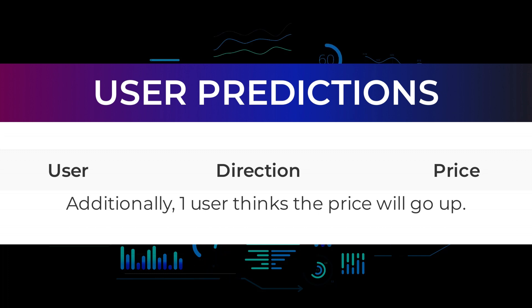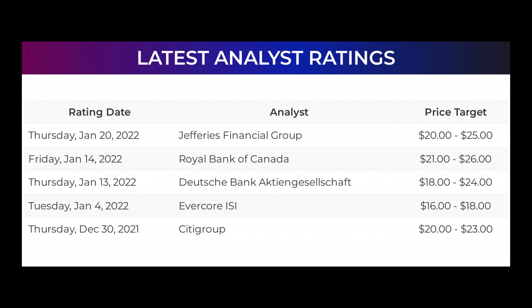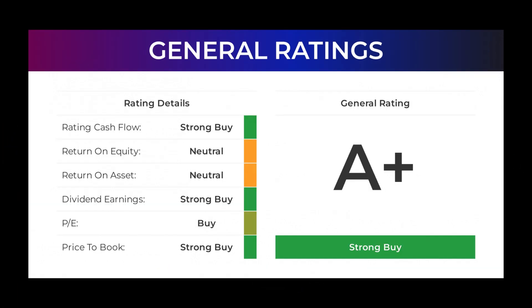Here are some price predictions and analyst ratings. On January 20th 2022, Jefferies Financial Group set target from $20 to $25. On January 14th 2022, Royal Bank of Canada set target from $21 to $26. On January 13th 2022, Deutsche Bank set target from $18 to $24. On January 4th 2022, Evercore ISI set target from $16 to $18. On December 30th 2021, Citigroup set target from $20 to $23. From analysts, Ford Motor stock received a general strong buy rating.